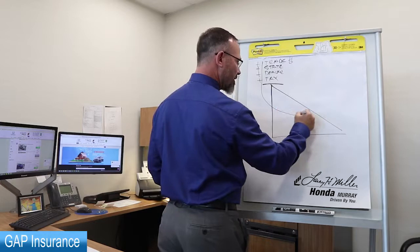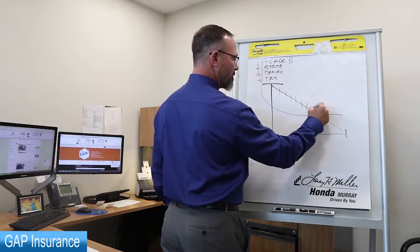You drive off the lot, your vehicle starts to depreciate until you get it paid off at this point right here. You're making your 72 payments like this.